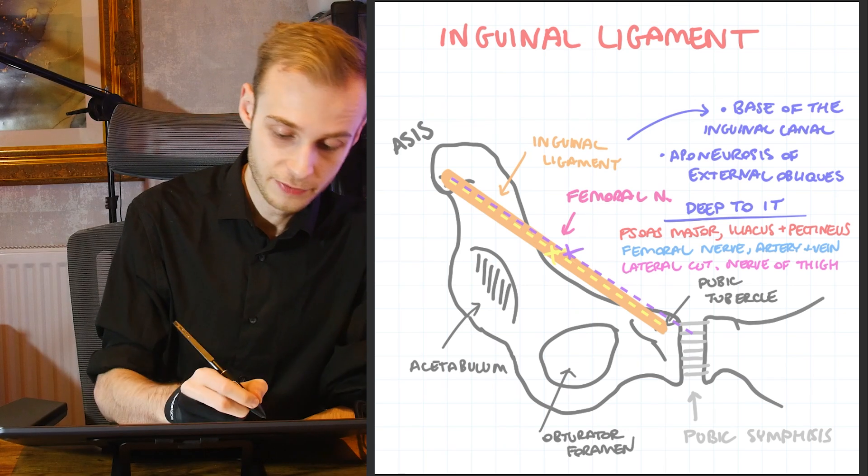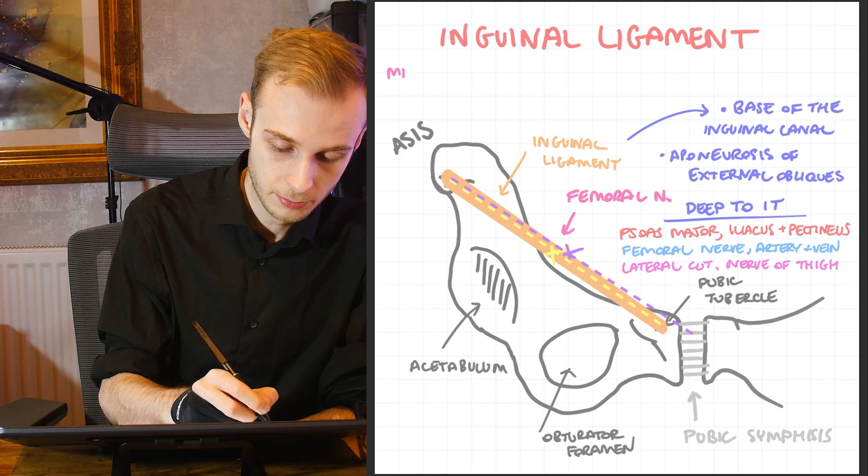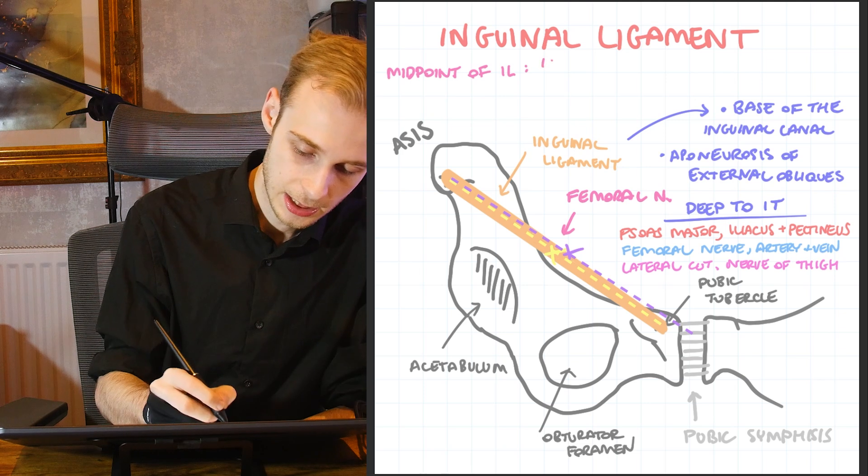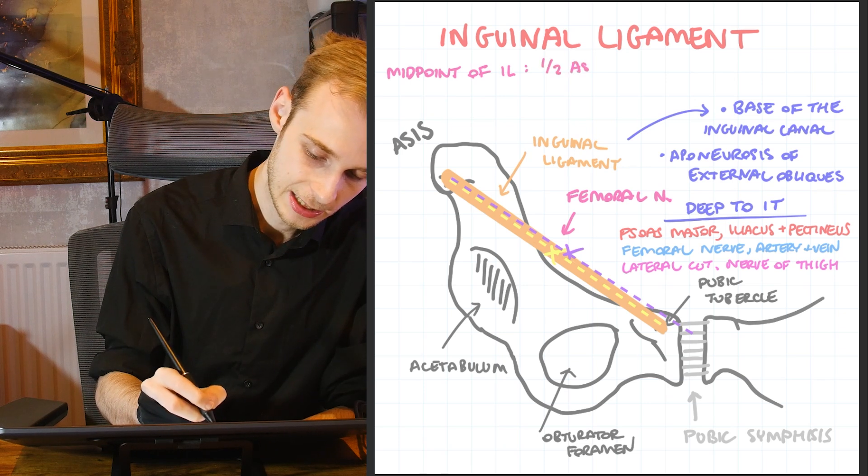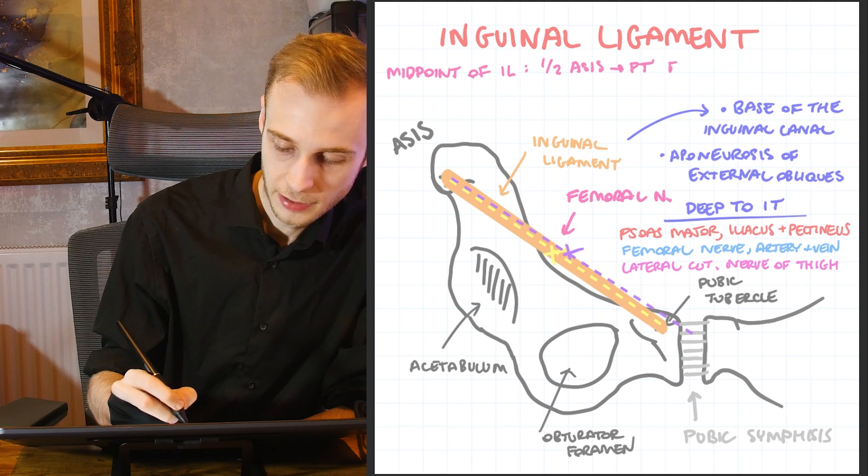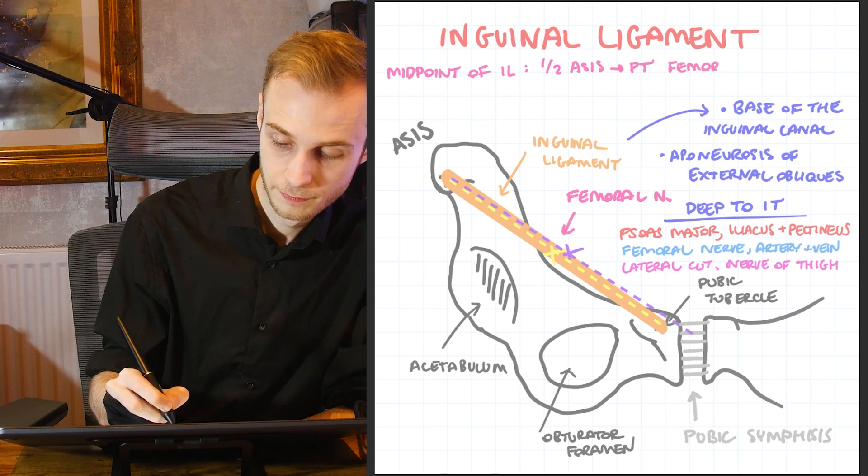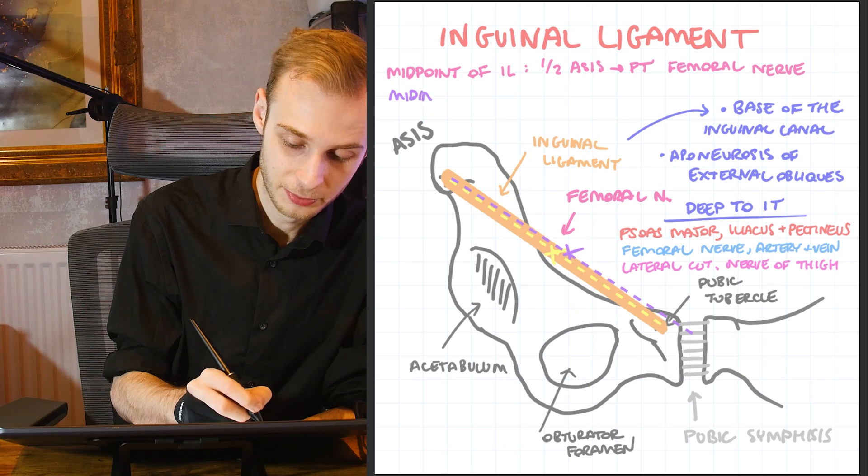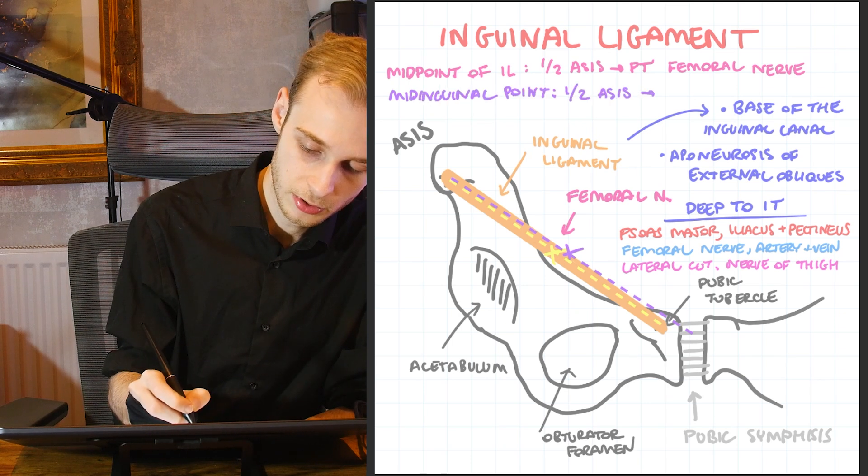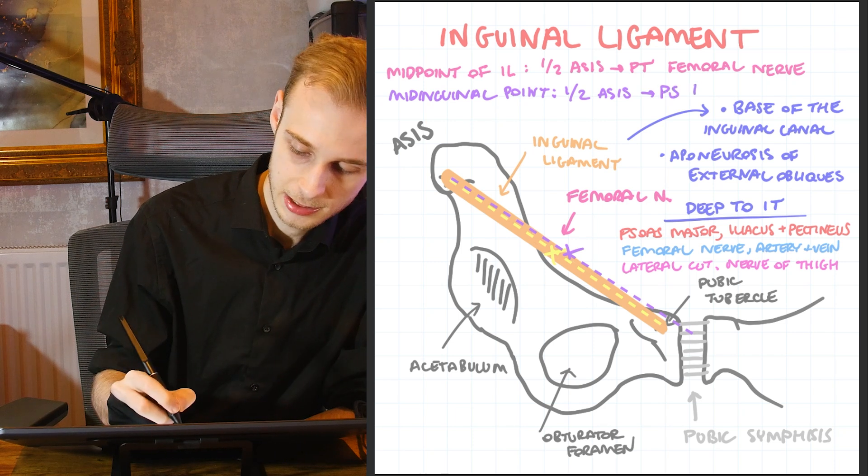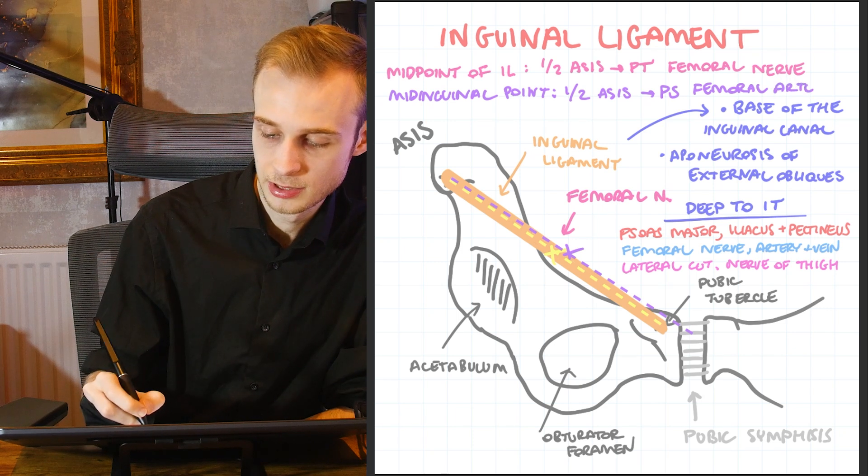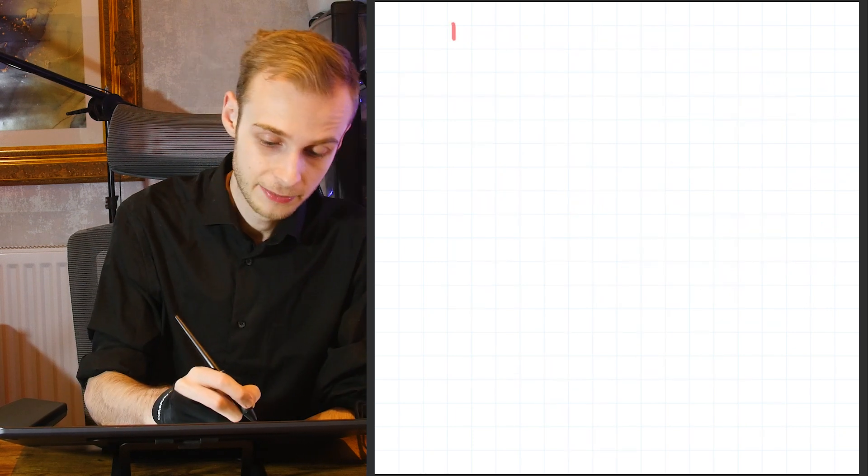Let's just make a note of that up here. The midpoint of the inguinal ligament is halfway from the ASIS to the pubic tubercle, and we'll find the femoral nerve, whereas the mid inguinal point is halfway from the ASIS to the pubic symphysis, and instead we will find our femoral artery.